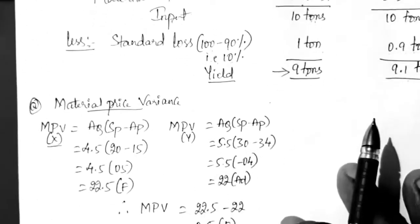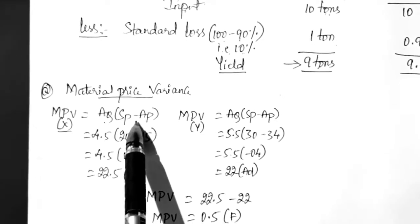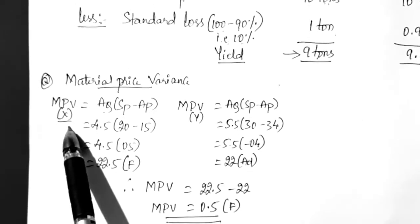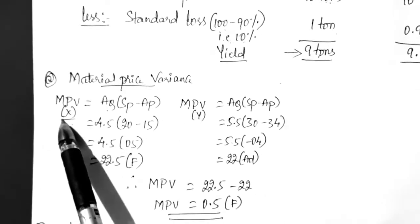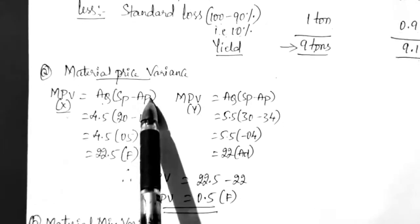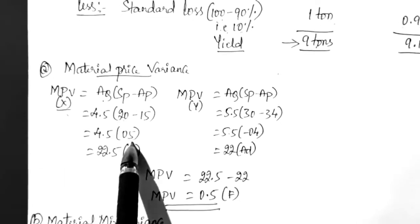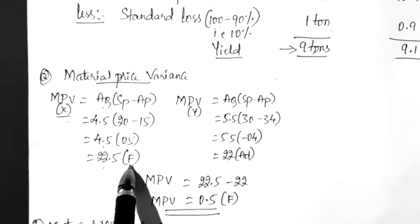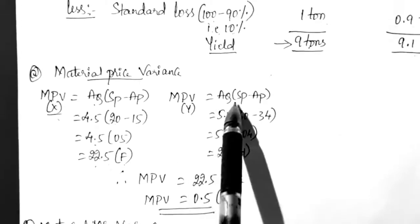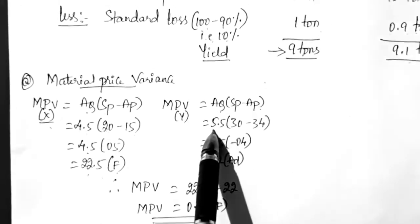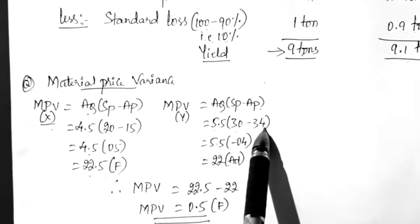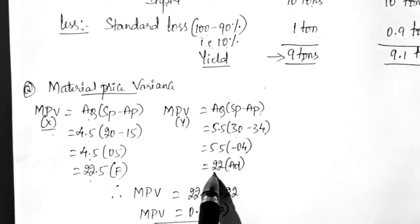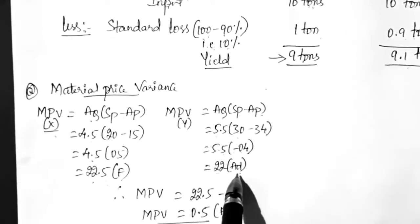Now let us calculate material price variance. The formula is: actual quantity × (standard price − actual price). For material X: actual quantity is 4.5, standard price is 20, actual price is 15. So 20 − 15 = 5, multiplied by 4.5 gives 22.5 — this is a favorable balance. For material Y: actual quantity is 5.5, standard price is 30, actual price is 34. So 30 − 34 = −4, multiplied by 5.5 gives −22, which is an adverse balance.